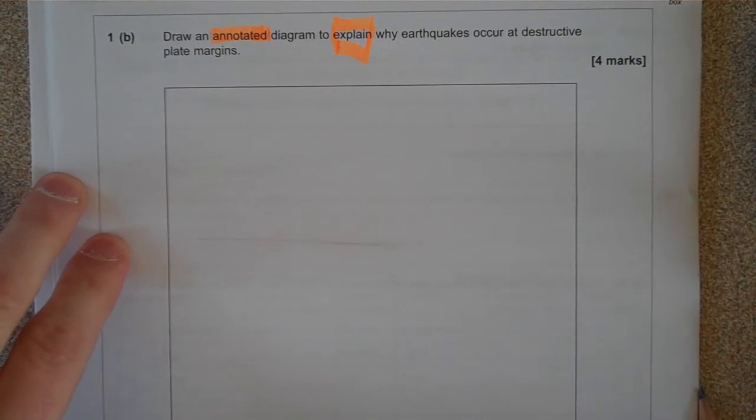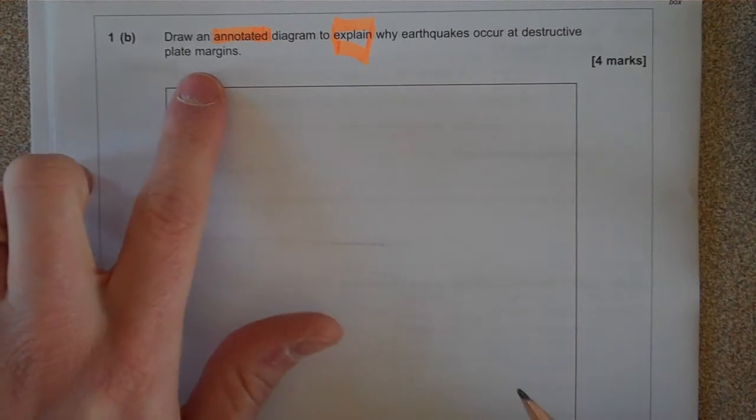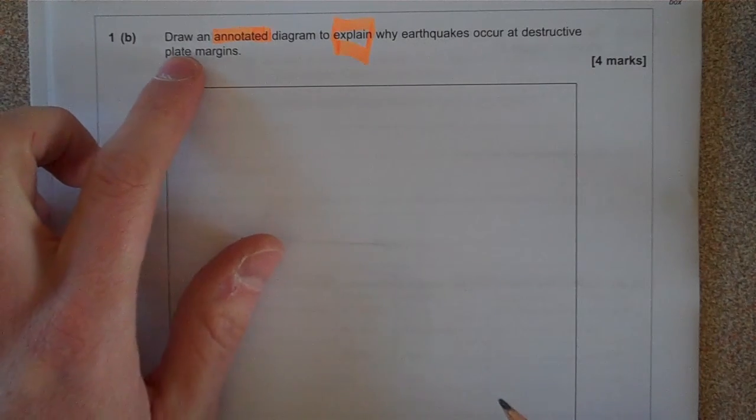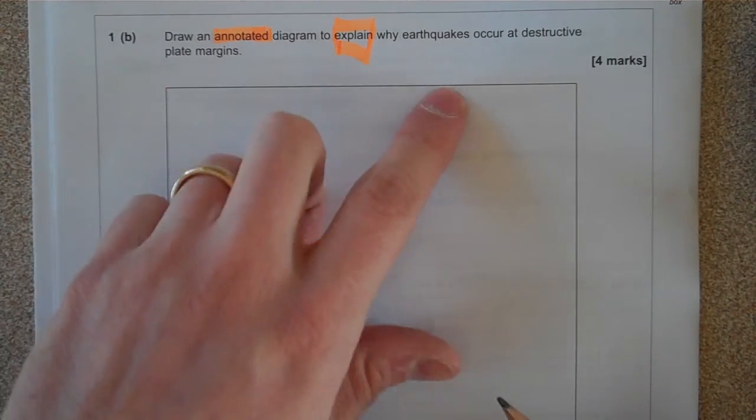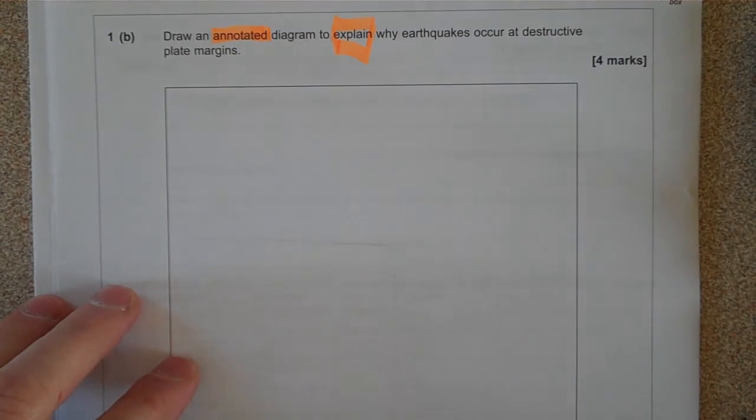This is a format question from paper 1 on the Restless Earth topic and I've highlighted the keywords in the question. It says, draw an annotated diagram to explain why earthquakes occur at destructive plate margins.